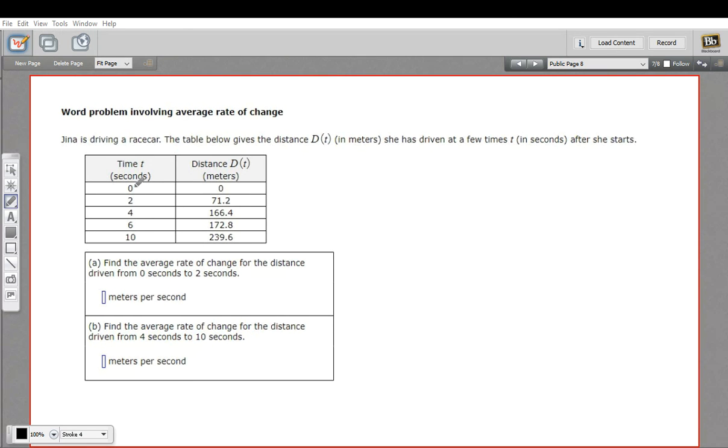Let's look at the chart to start with. We've got times here in this column, zero seconds up to 10 seconds, and the distance traveled. So this is about Gina driving a race car. At zero seconds, she's traveled zero meters. That makes sense. At 10 seconds, she's traveled 239.6 meters.